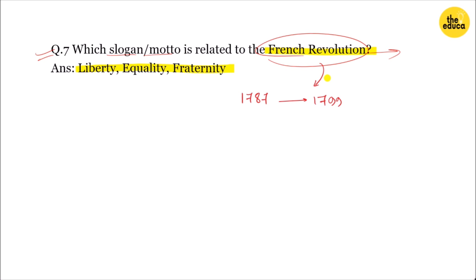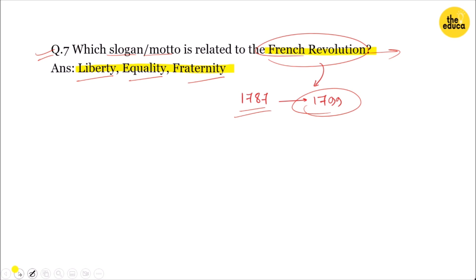This is a world history question about the French Revolution. The French Revolution started in 1787 and ended in 1799. The slogan or motto related to the French Revolution is Liberty, Equality, and Fraternity.